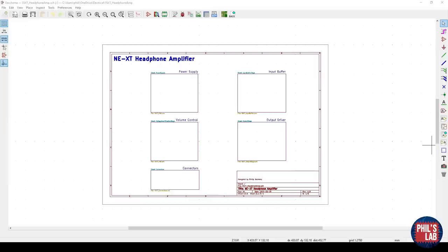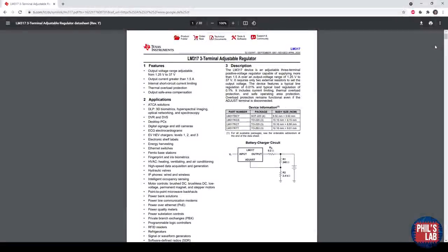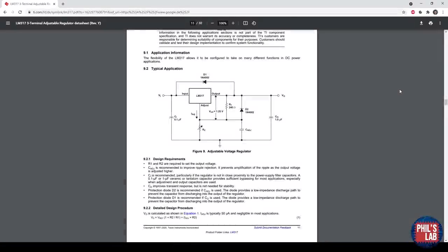So here we are in KiCad looking at the NE headphone amplifier schematic. Let's start off with the power supply. To generate my main 15 volts DC rail, I'm using this LM317 linear regulator. Now these aren't terribly efficient, but they're fairly cheap, really easy to use and fairly quiet. As usual, the data sheet gives us a typical application schematic which is what I pretty much use in the final design.